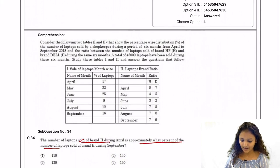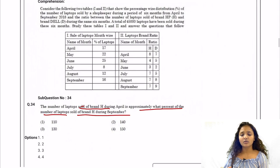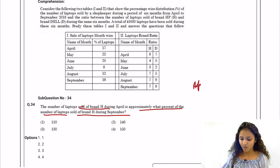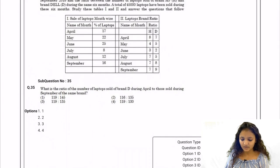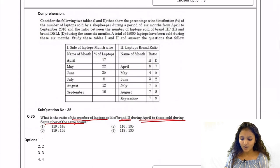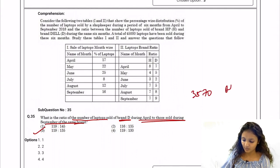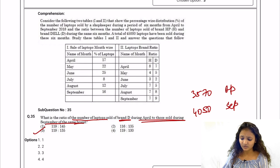Question 34: HP laptops sold in April are approximately what portion of HP laptops sold in September? Finding values for April and September and computing the percentage gives approximately 130%. Option three is correct. Question 35: Ratio of Dell laptops sold in April to those sold in September — the answer comes out to 3,570 for April and 4,050 for September, giving the ratio 119:135. Option four is the correct answer.